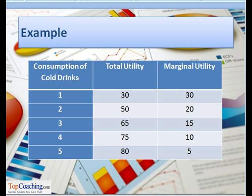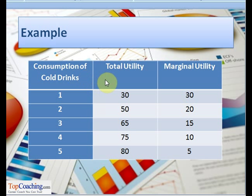Let us take an example to clarify this concept. Suppose a consumer consumes five bottles of a cold drink. The utility derived from the consumption of the fifth bottle after drinking four bottles will be less compared to the utility derived from the fourth bottle after drinking three bottles. Similarly, it increases for the third bottle and further for the second. As illustrated in the table, total utility increases as the number of bottles consumed increases, but marginal utility decreases gradually.